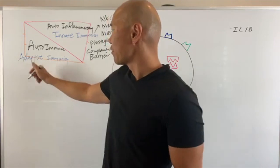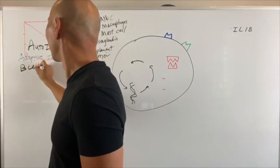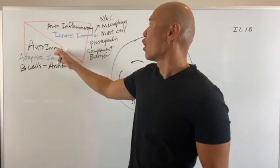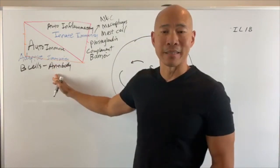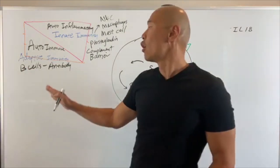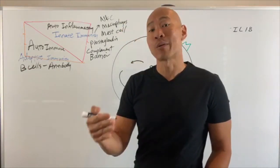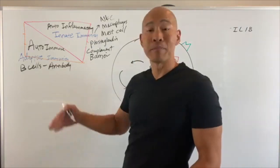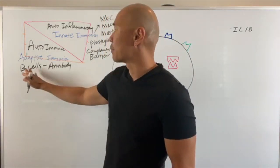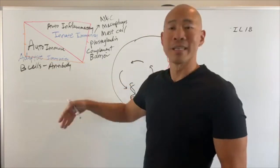On the other hand, adaptive immunity includes things like antibody production. B cells make antibodies, and primarily autoimmune diseases are mediated by antibodies. That's why most blood tests used to diagnose autoimmune disease are antibody-based — like TPO antibody or thyroglobulin antibody for Hashimoto's, or myelin basic protein antibody for MS.